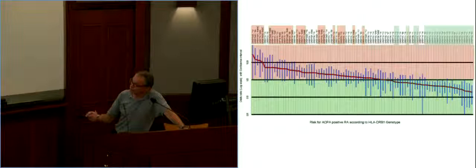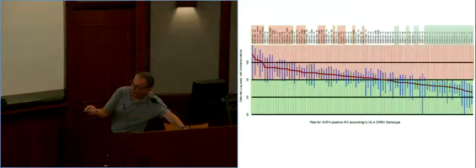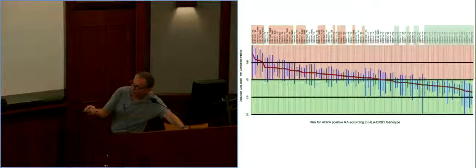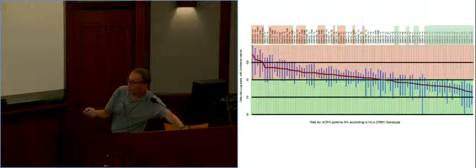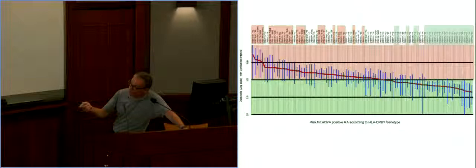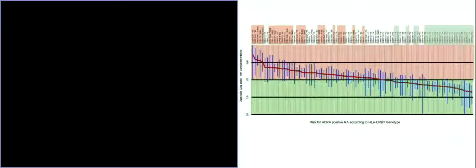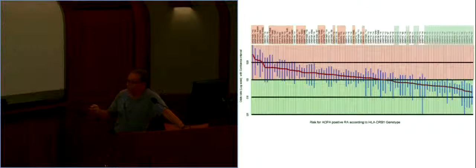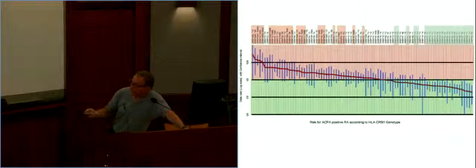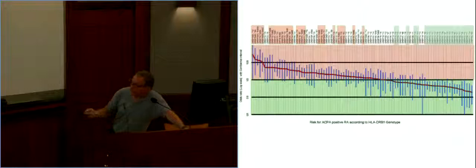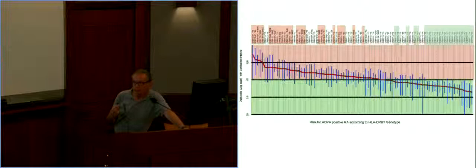So we went for 1,000 ACPA plus RA patients, 2,000 controls, and we calculated genotype-specific risks and just checked what it looked like and whether it would match any particular model. And so that's the general data. Here you have genotypes, which have been ranked by order of odds ratio from like 30 down to 0.2. And whenever it's highlighted in pink, it means it's significantly higher than 1. Whenever it's in green, it means it's significantly lower than 1. And the bottom line is you see that most of the genotypes on the left, the high-risk genotypes, they are actually double-dose shared epitope genotype. And that on the right, all the low-risk genotypes, they are double-dose shared epitope-negative genotypes.